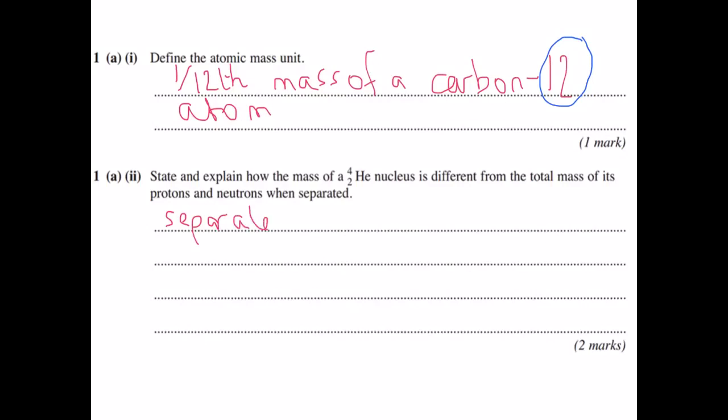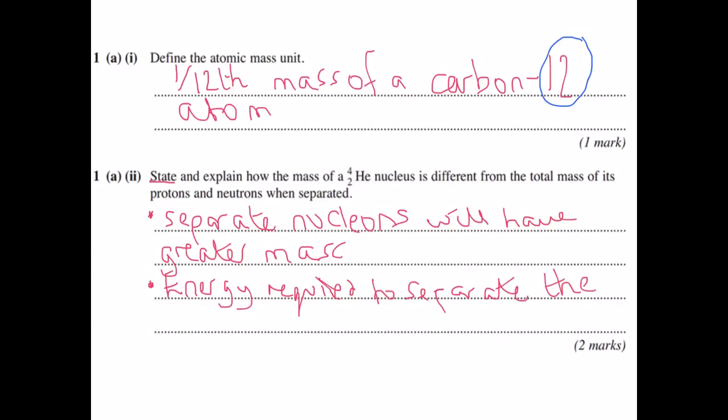So you would expect that the separate nucleons will have greater mass. So we've done the state part of the question, so now to explain, to get the second mark, what you need to say is that energy is required to separate the nucleons. Or you could also say, conversely, that you actually release energy when the nucleus is formed, so then obviously that energy must have come from mass, so you must lose or transfer some of that mass into energy, so you get a larger mass when they were separated.